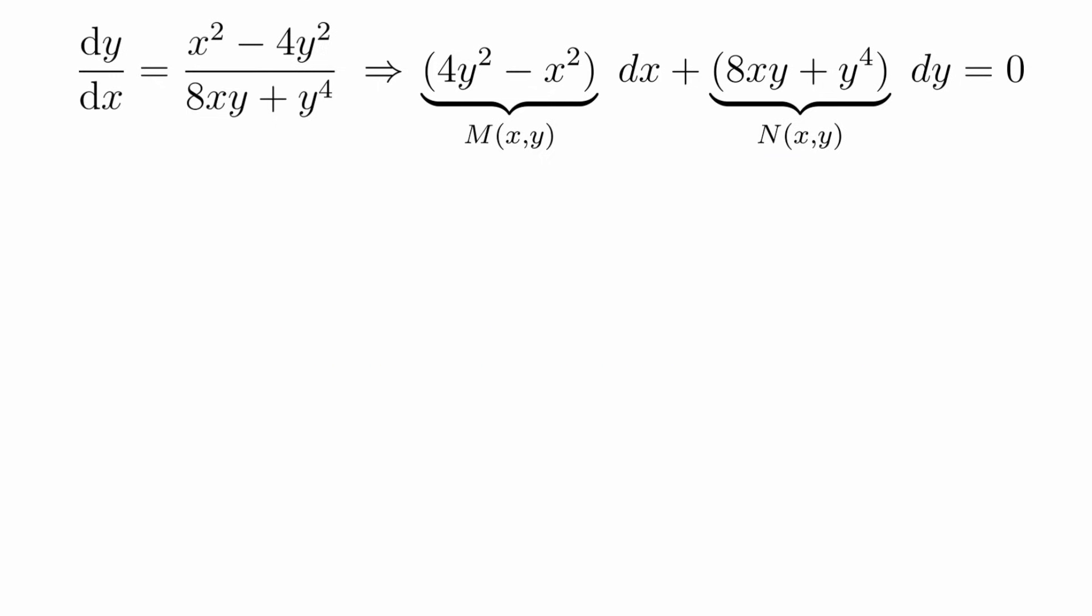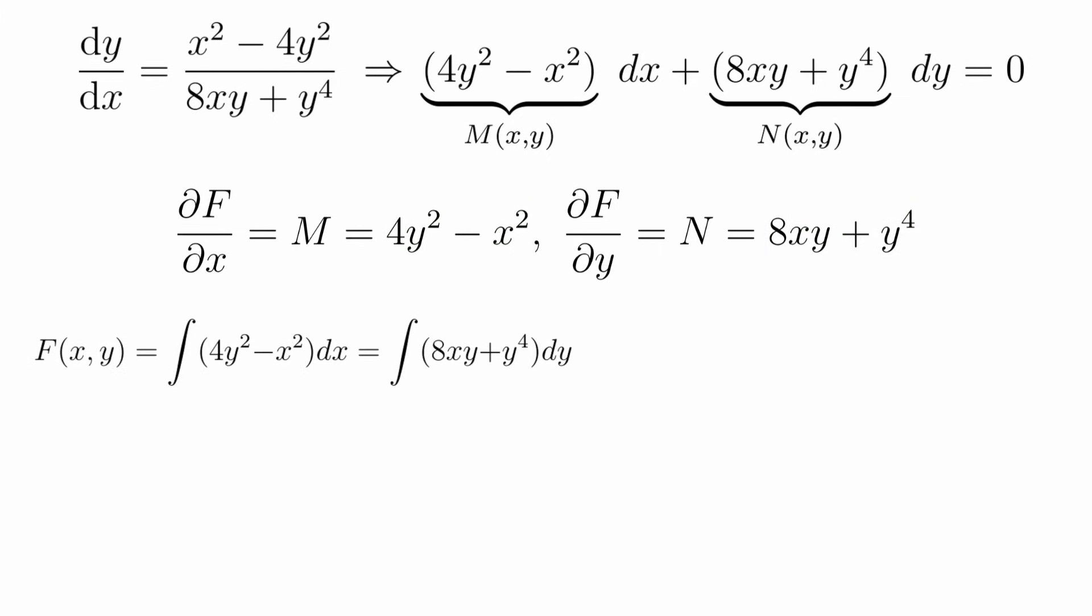So where can we go from here? Well, we know there must exist some potential function f such that its partial derivative with respect to x is our function M, and its partial derivative with respect to y is our function N. And we know both of them, so we can integrate both of these equations with respect to just the one variable to obtain two expressions that must be equal to each other.